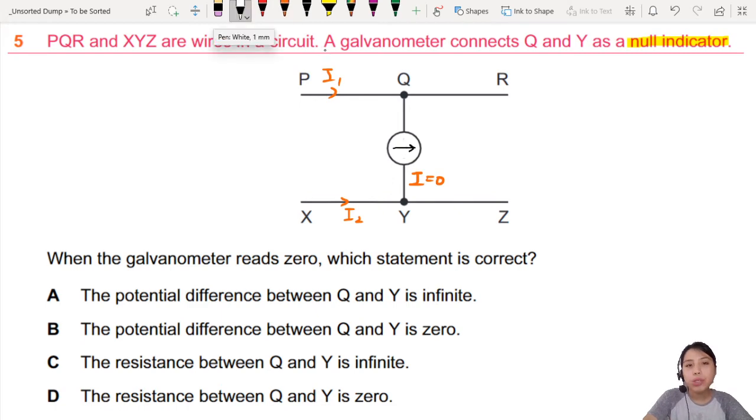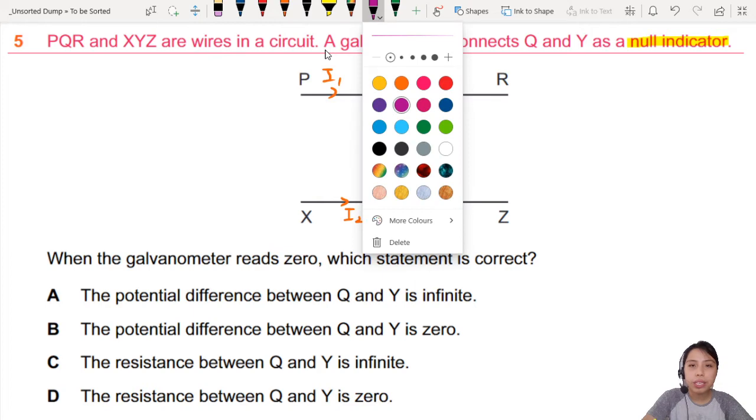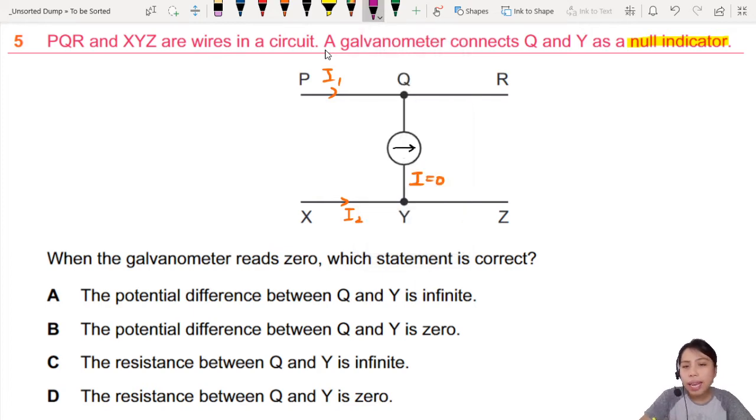This is what we call a bridge. And number two, we can talk about the potential, how the potential is between these two points. So you could say that the potential difference across Q and Y is zero. Notice this is potential difference. It's different from potential. Potential difference is different. For example, if I have this side on Q is eight volts.